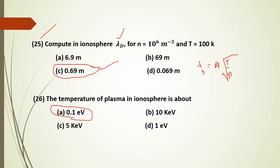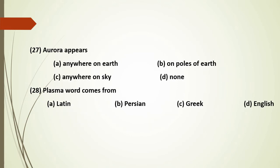The temperature of plasma in the Earth's atmosphere is about 0.1 eV. Aurora does not appear everywhere on Earth — it appears near the poles.